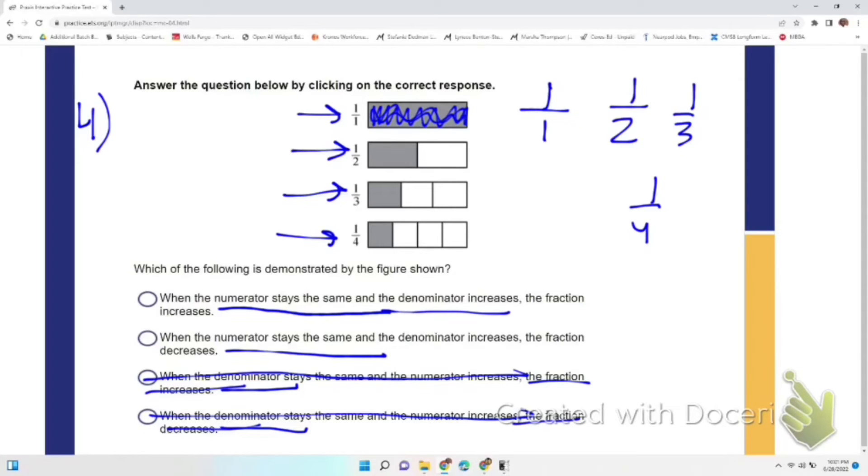It says the denominator increases. The fraction increases or the fraction decreases? That is what we're really looking at here. And as you can see, as the denominator increases, the shading is smaller, smaller, smaller, so the fraction actually decreases.